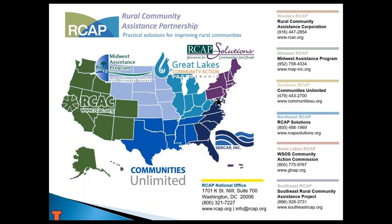RCAP, the Rural Community Assistance Partnership, has their national office in DC and is made up of six regional affiliates. We're in Illinois, so we're part of the Great Lakes Community Action Partnership area. They have about five staff in Illinois alone and over 200 staff nationwide who are technical assistance providers. Most of them are licensed water or wastewater operators, and they also have private well experts and onsite system experts. If someone has a question, we can refer them to the right RCAP office, or if you want a well assessment or onsite assessment, you can contact your region directly.